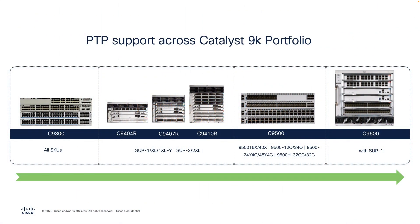We have different models in the Catalyst 9000 family of switches, varying all the way from access to core in both fixed and modular form factors to support flexible deployments. Port speeds range all the way from 10 megabit to 400 gigabit speeds across the platforms.